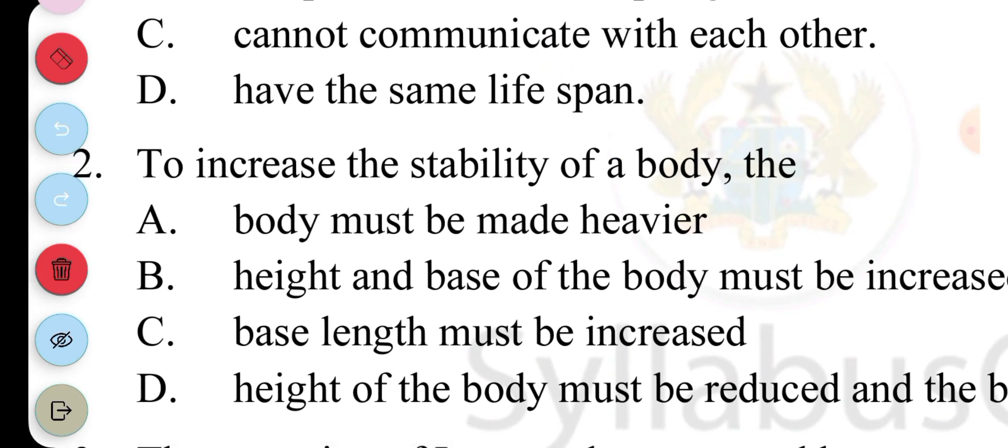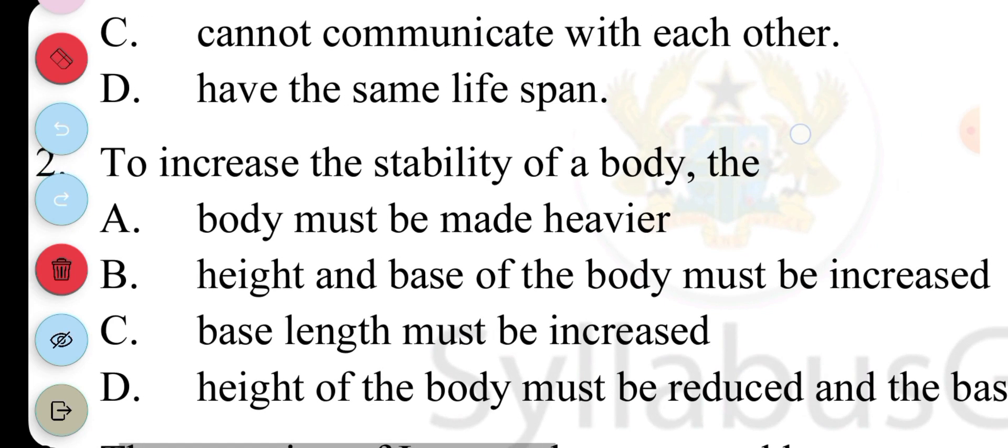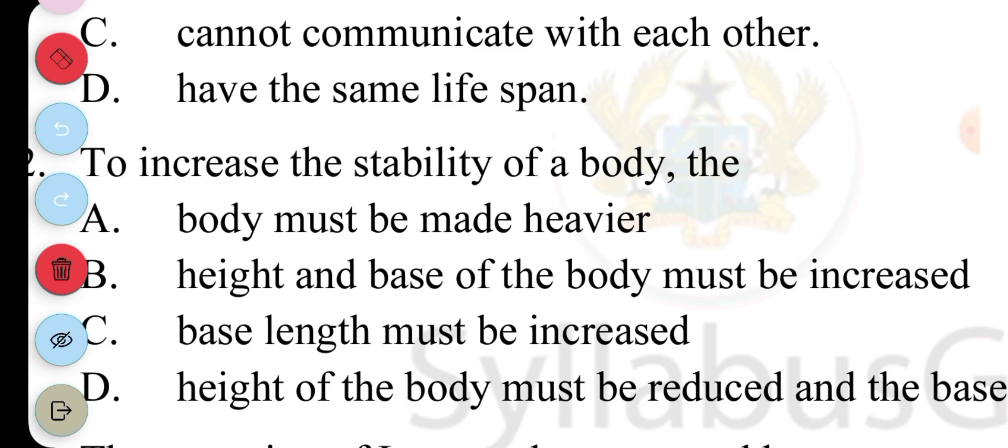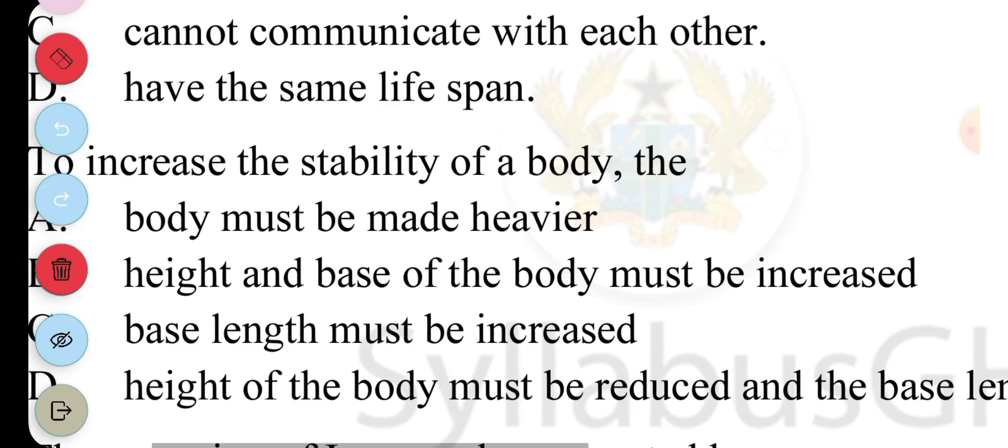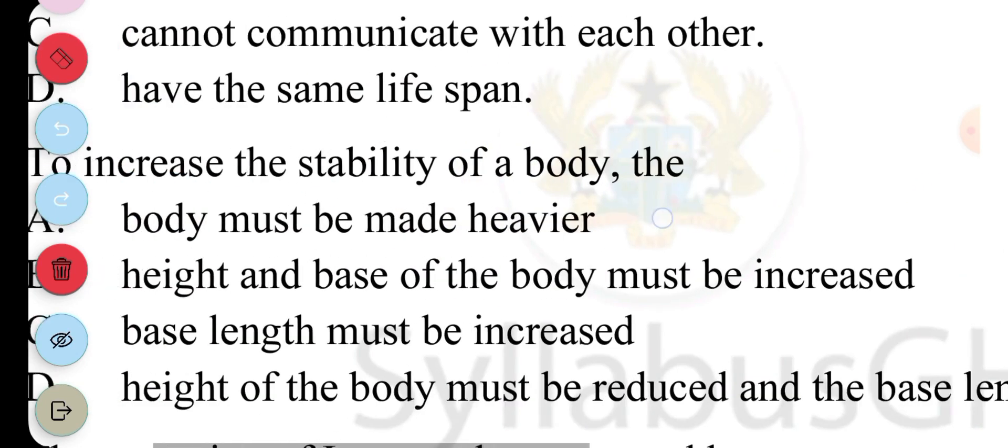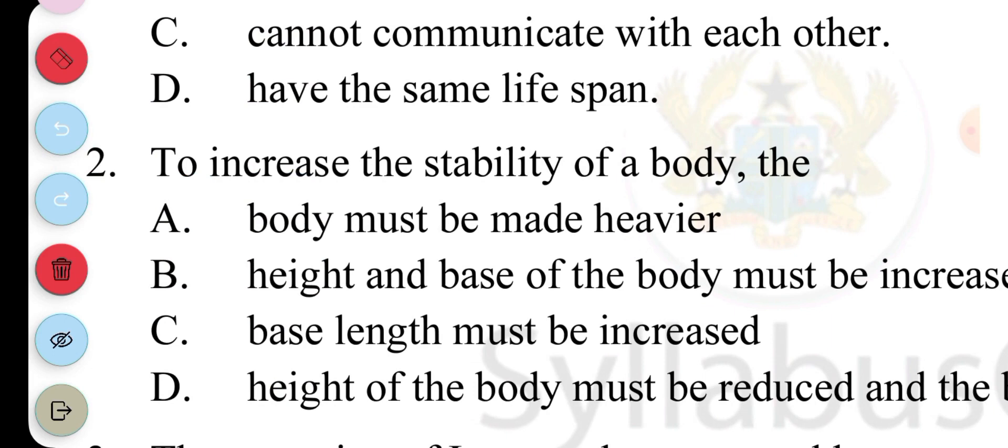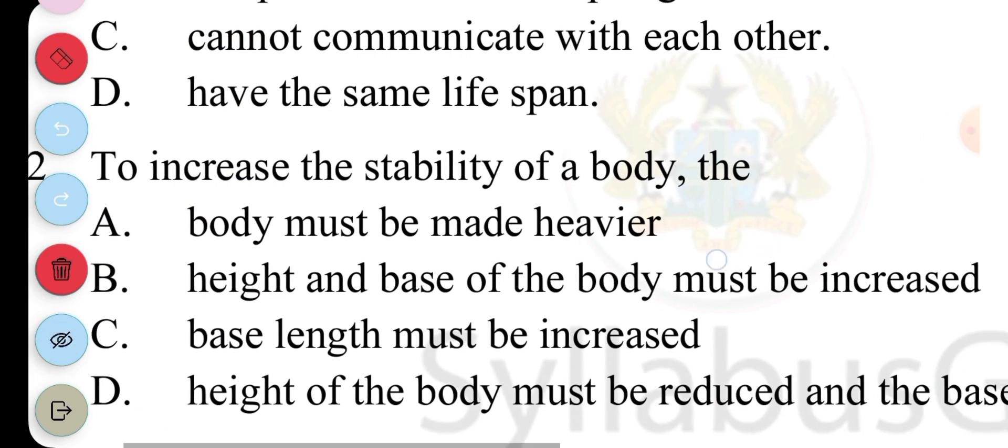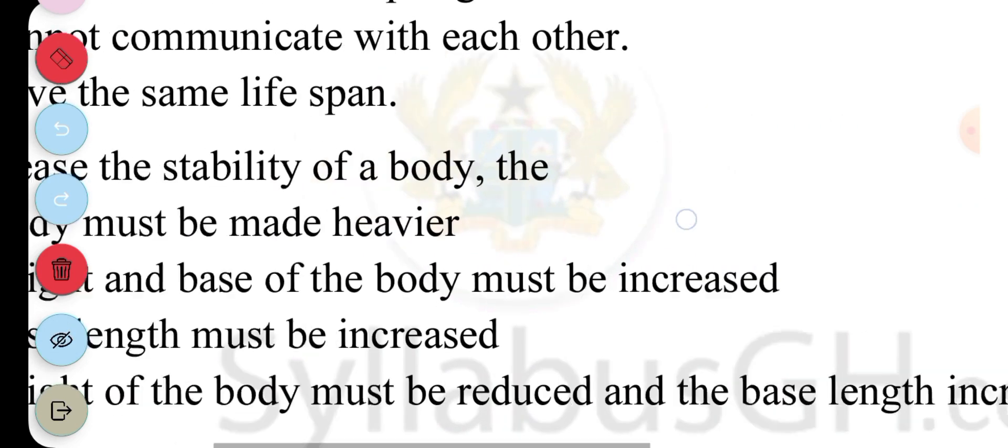Question two, to increase the stability of a body. A, body must be made heavier; B, height and base of the body must be increased; C, base length must be increased; D, height of the body must be reduced and the base length increased. The answer to question two is D, the height of the body must be reduced and then the base length increased.